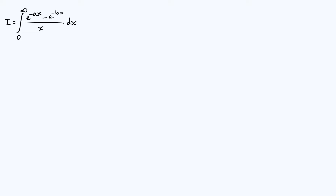The integral we are trying to evaluate is the integral from 0 to infinity of (e^{-ax} - e^{-bx}) / x with respect to x. It's a function of a and b, and we're trying to evaluate it in terms of a and b. I'm going to assume that a and b are positive numbers, because that ensures those exponential terms get smaller and smaller as x goes to infinity, so this integral will actually converge.